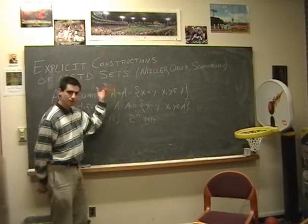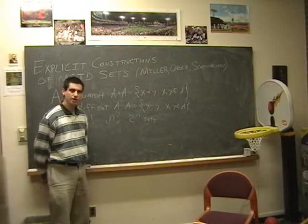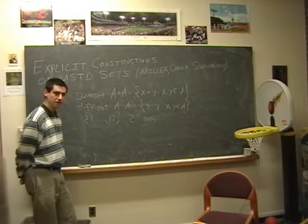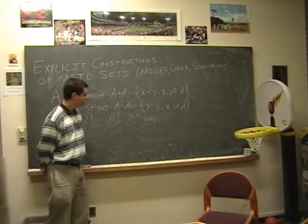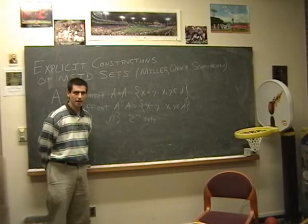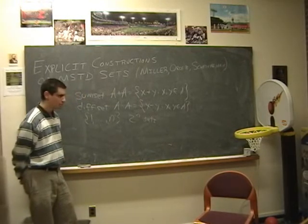was such that the ratio of the number of more sum than differences to 2^n would tend to zero. And it turns out this is not the case. Martin and O'Brien a few years ago proved that a positive percent of sets are actually sum dominated. The percent is very small, but it does not tend to zero.